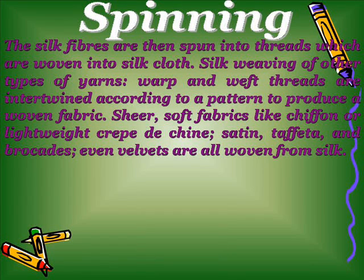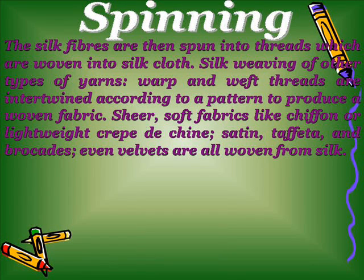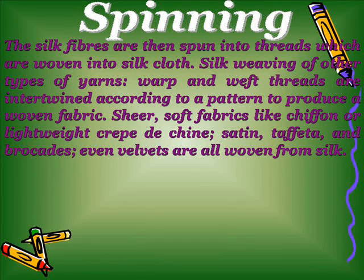Spinning: The silk fibers are spun into threads which are woven into silk cloths. In silk weaving, warp and weft threads are intertwined according to a pattern to produce a woven fabric. Sheer soft fabrics like chiffon are lightweight, while crêpe, shiny satin, taffeta, and brocade — even velvet — are all woven from silk.